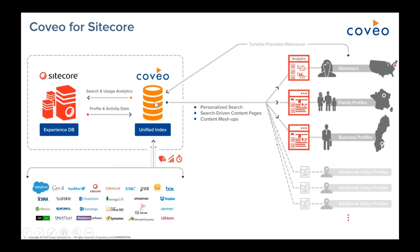How does Coveo work with Sitecore specifically? The index and relevance algorithms are hosted in the cloud, but there is a package installed on your Sitecore server or servers. On the back end, there are configuration files and indexing pipelines that tie into Sitecore so that when you publish, update, or delete a page, that information — the page, the parts you intend to index, and the associated metadata — is pushed to Coveo pretty much immediately to be indexed in the cloud and made searchable right away.